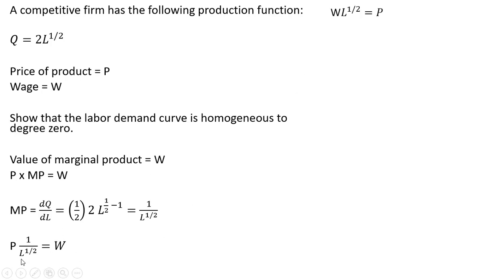So I multiplied through by L to the 1 half power. So now we have this expression. And now dividing everything through by W, we get this. Getting rid of this 1 half over here in the exponent, we're going to square both sides. And here is our labor demand equation.